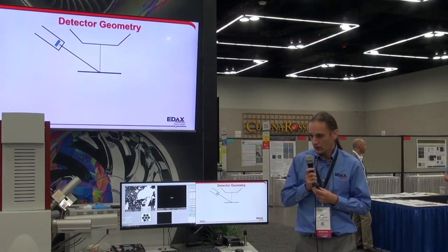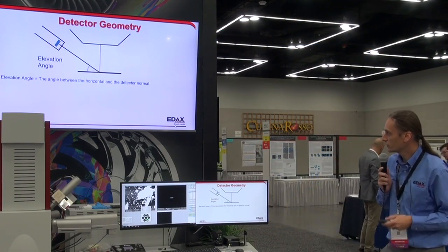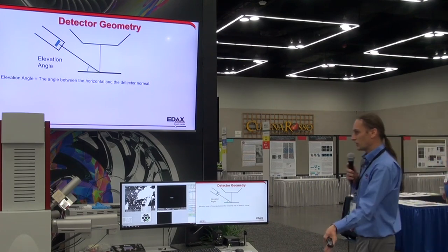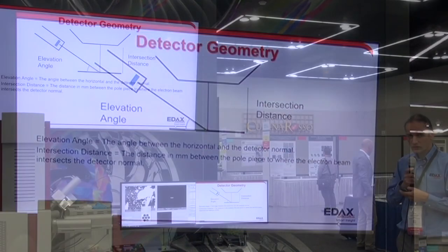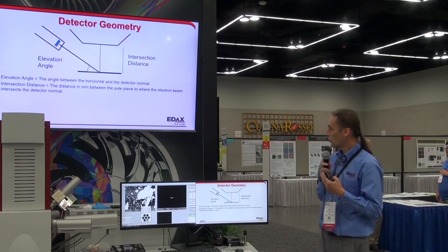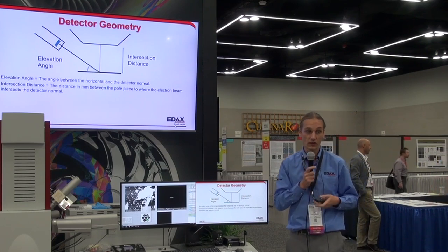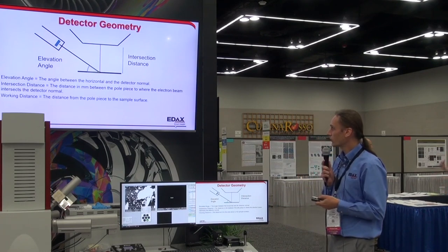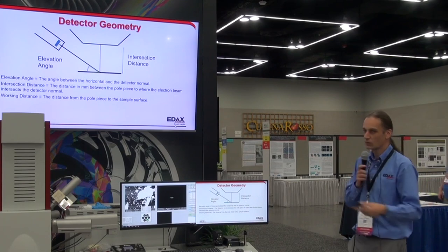The geometry of the system also has an effect on the background. We have what we call the elevation angle — the detector typically comes in at an angle of 35 degrees into the chamber, and the elevation angle is the angle between horizontal and the detector normal. We have the intersection distance, which is where the normal to the detector coincides with the electron beam — basically the sweet spot of the microscope for the most efficient x-ray collection. The working distance is the distance from pole piece to sample surface. At ideal conditions, the intersection distance and the working distance are the same.